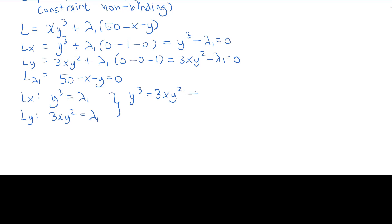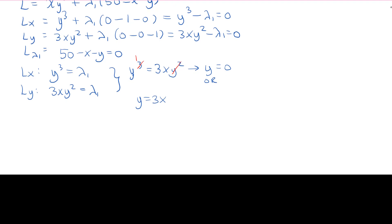So either y equals to 0, or we can cancel out two of the powers of y, which leaves y to the power of 1 on the left equals to 3x. And from there, substitute the 3x in for the y in our L lambda constraint.